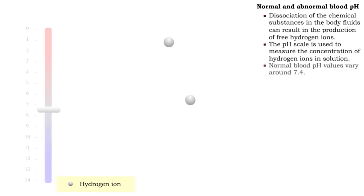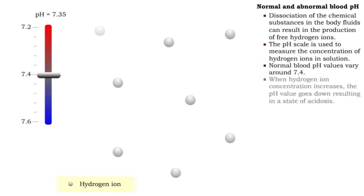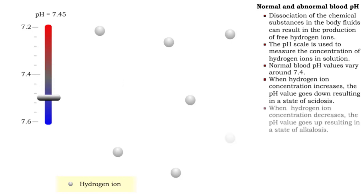The normal blood pH values vary around 7.4. When hydrogen ion concentration increases, the pH value decreases, resulting in a state of acidosis. Conversely, when hydrogen ion concentration decreases, the pH value increases, resulting in a state of alkalosis.